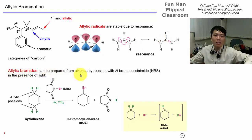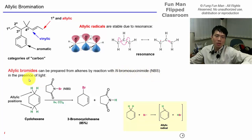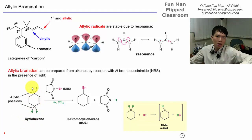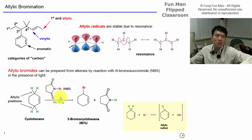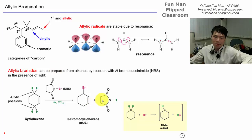Allylic bromides can be prepared from alkenes using NBS (N-bromosuccinimide) under sunlight or UV light. For cyclohexene, there are allylic positions at carbons 1, 2, 3, and 4 — four hydrogens available for substitution by bromine. The solvent used is tetrachloromethane (CCl₄). In the presence of UV light, bromination occurs at the allylic position.